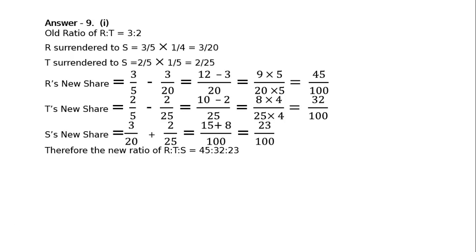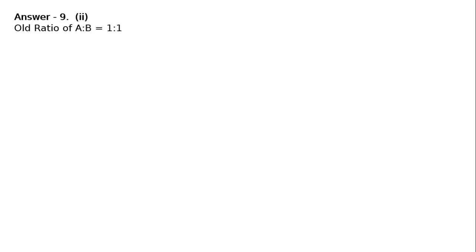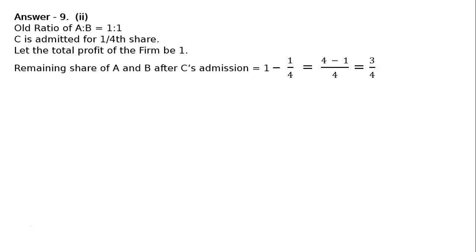Part 2: A and B are partners. They admit C for one-fourth share in future. The ratio between A and B would be 2:1. Old ratio of A to B is equal to 1:1. C is admitted for one-fourth share. Let the total profit of the firm be 1. Remaining share of A and B after C's admission: 1 minus 1/4 equals 3/4. This 3/4 will be shared not in the ratio of 1:1 but in the ratio of 2:1, as given in the question. In future A and B will not be sharing equally.